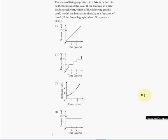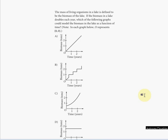Hello everyone, welcome to my free online tutorial for the new SAT math section. This is problem number 20, practice test for section 4, calculator allowed, found in the new SAT official study guide. The mass of living organisms in the lake is defined to be the biomass of the lake. If the biomass in the lake doubles each year, which of the following graphs could model the biomass in the lake as a function of time?